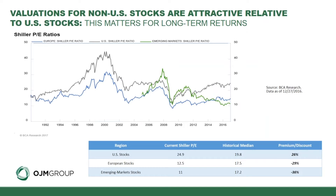Taking that a step further and adding in emerging market stocks: from a relative price-to-earnings standpoint, US stocks are about 20-26% overvalued versus their historical median, whereas European and emerging market stocks are 30-plus percent undervalued on a historical median price-to-earnings basis. This is just another case for why we think there are attractive valuations relative to US stocks.